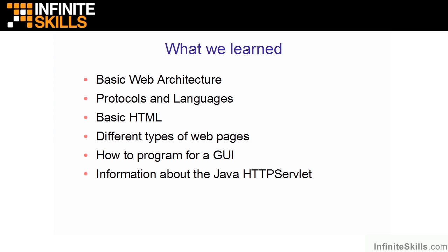That wraps up everything we needed to cover in our web architecture overview. We looked at basic web architecture, protocols, and languages used, and reviewed some HTML as a base going forward. We looked at different types of web pages to understand where we've come from and where we're going, discussed GUI programming versus procedural programming, and took our first look at the Java HTTP servlet.